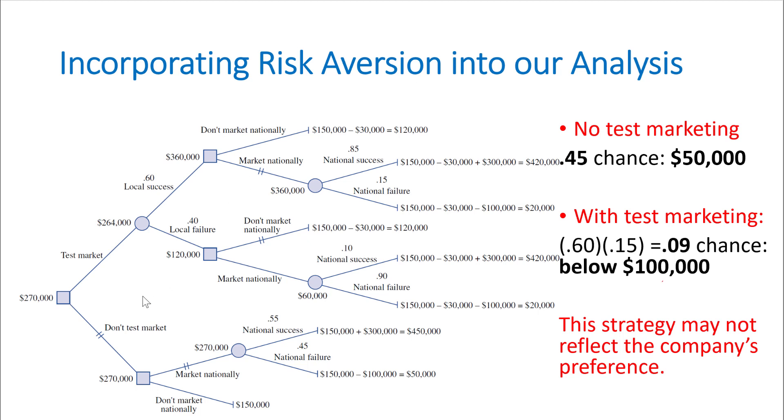After doing the backward method, we concluded that the best decision here is to not test market it locally, because it gives us the highest expected value, which is $270,000.